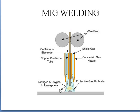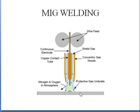Here the electrode is consumable and this is the wire feed, so you have continuous feed of electrode. This is the contact tube and this is the shielding gas. The positive is given to the electrode and negative is given to the workpiece. The material will get melted and will be poured over the workpiece, and the shielding gas will form a protective layer over the MIG welding.